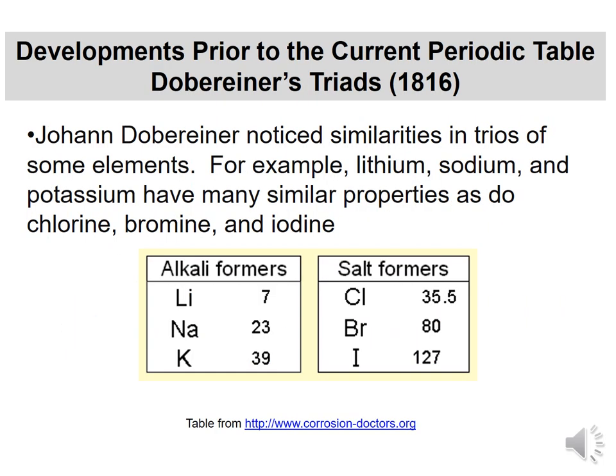So we go back to 1816 — only four years after Dalton's atomic theory — and talk about Johann Döbereiner. What he noticed is that elements seem to occur in trios with similar properties: lithium, sodium, potassium; and chlorine, bromine, iodine all appeared to work together.